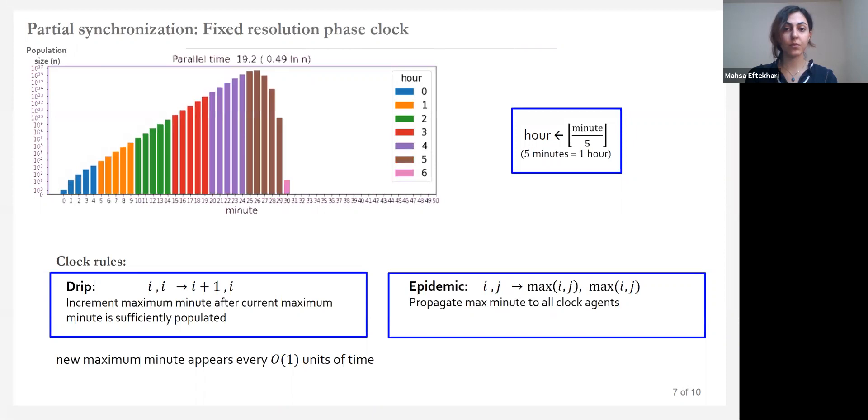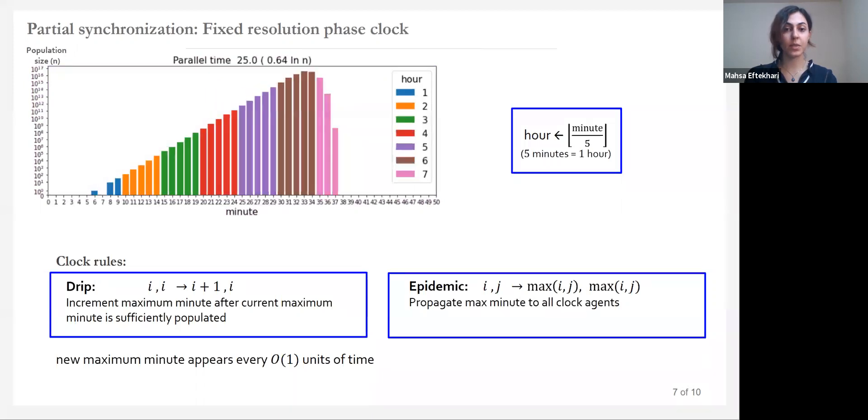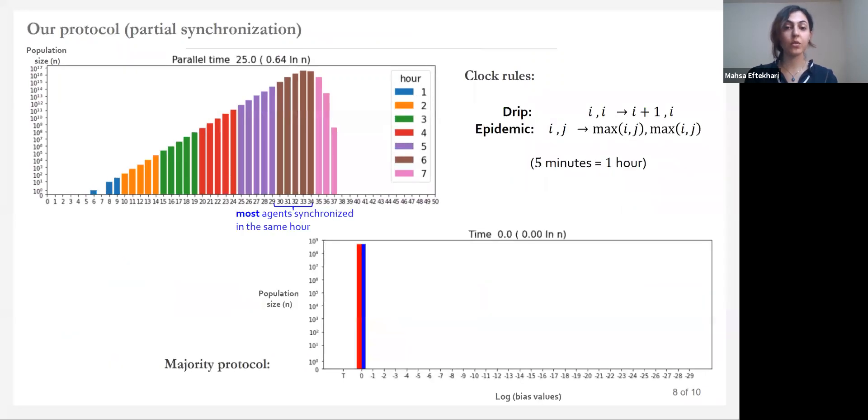This is in contrast with the existing synchronization schemes in population protocols that maintain hours of log n time each. We can also look at a simulation of our majority protocol with this partial synchronization and see how the agent's biases change over the time.